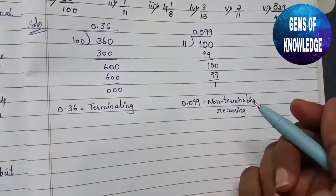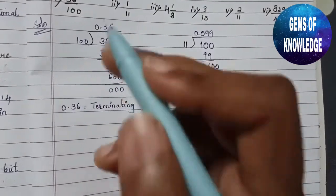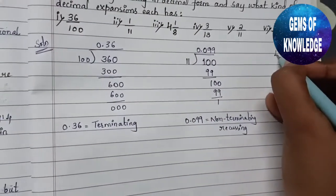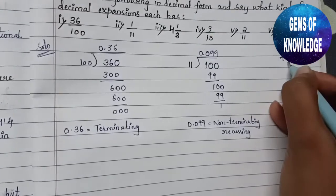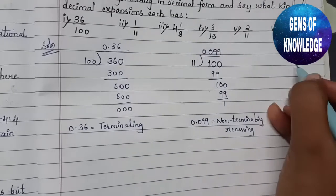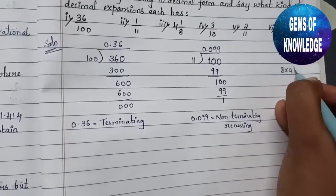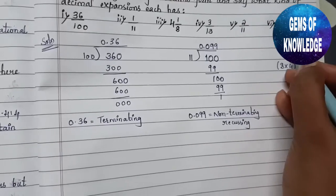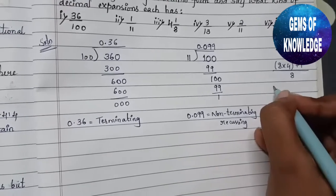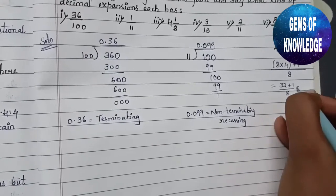Terminating means the number stops at some point. This was the second question. Now the third question is 4 and 1/8. Since this is a mixed fraction, we first convert it to an improper fraction by multiplying the denominator 8 by the whole number 4, then adding the numerator 1. So 8 times 4 is 32, plus 1 is 33, divided by 8.